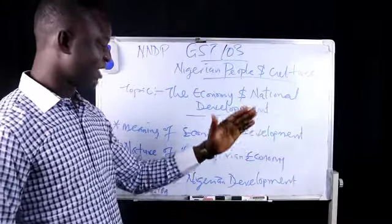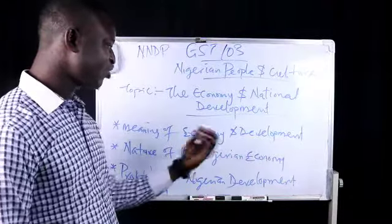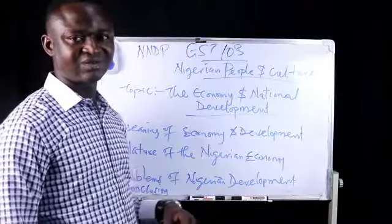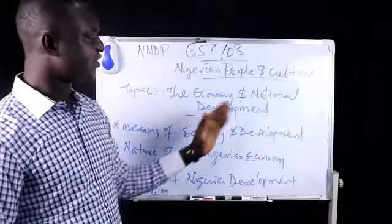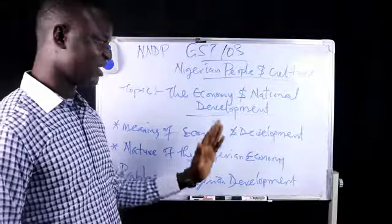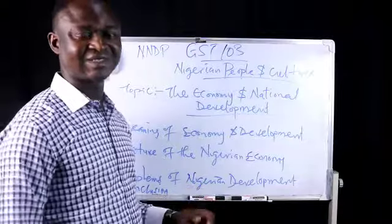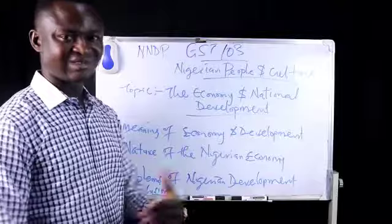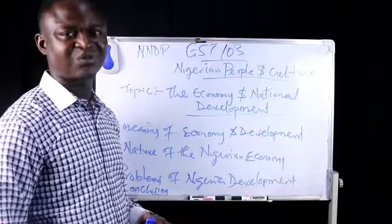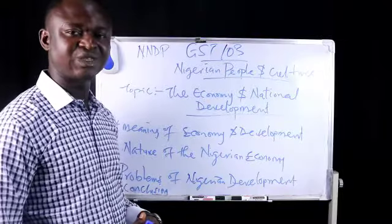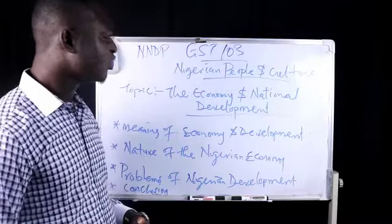Food crops like grains, tuber, and root crops — any crop that can be eaten directly — these are food crops. Check each state of the federation; there is no state that doesn't have one agricultural produce or the other. In the north, you have grains in excess: millets, maize, sugarcane. Agriculture was the mainstream, the main stay of the Nigerian economy prior to the coming of the colonial masters.